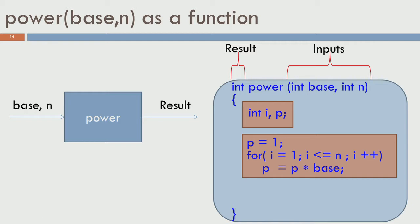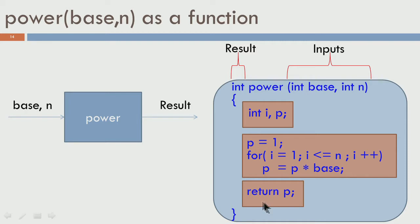After the loop, p holds the final result. But the function also has variables i, base, and n — there is no way a compiler can figure out which variable should be returned as the result. For that we use the keyword 'return', which is a reserved word in the C language. 'return p' tells the compiler: of all the variables and calculations done, the final result is stored in p — please take that and return it to whoever called this function.